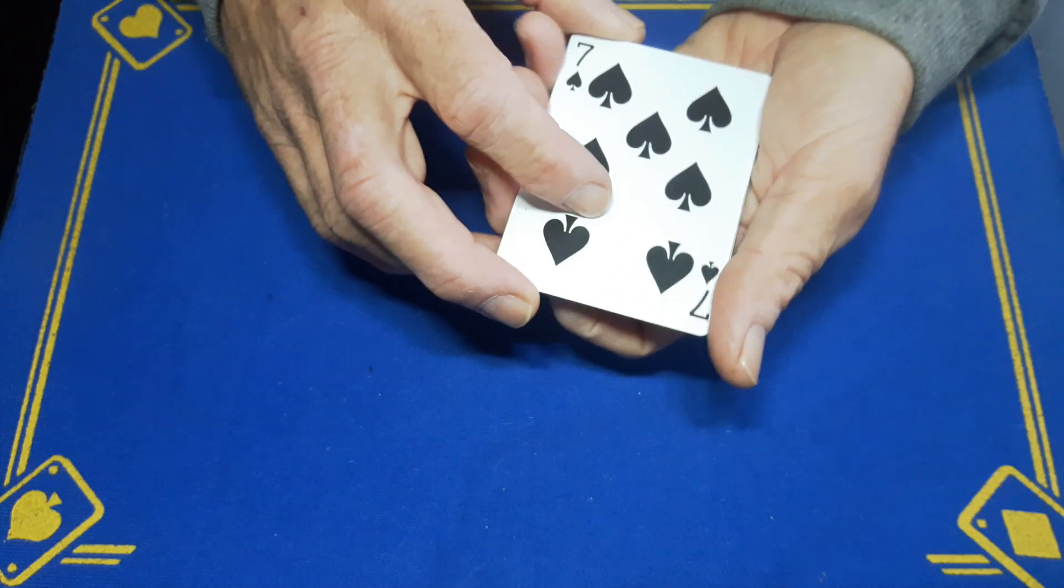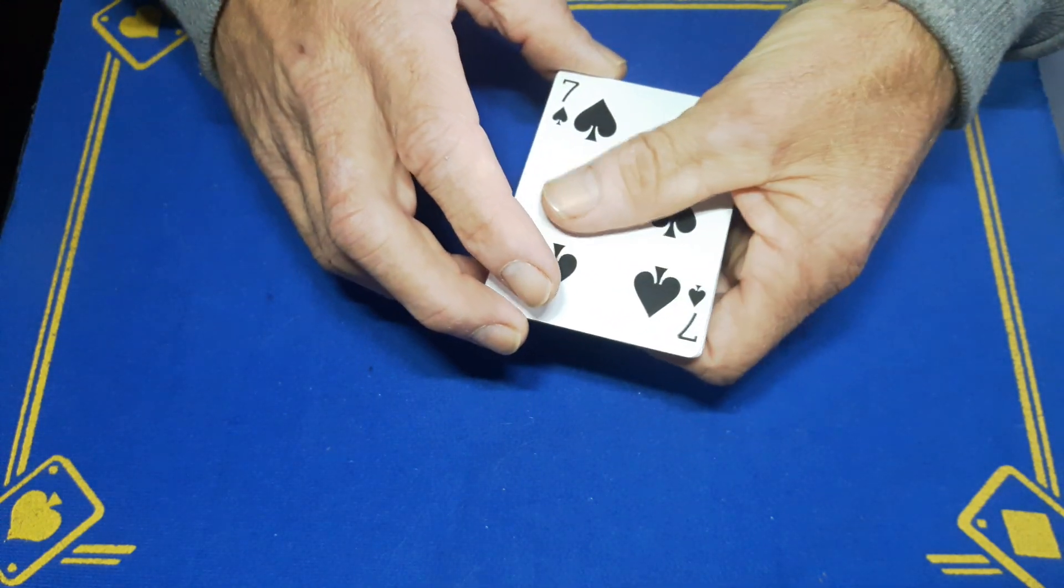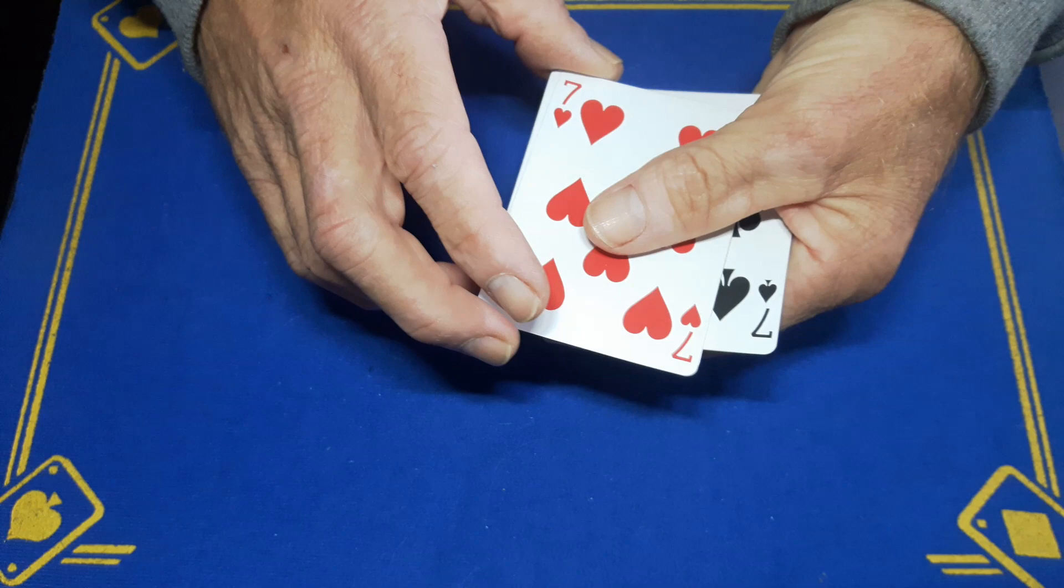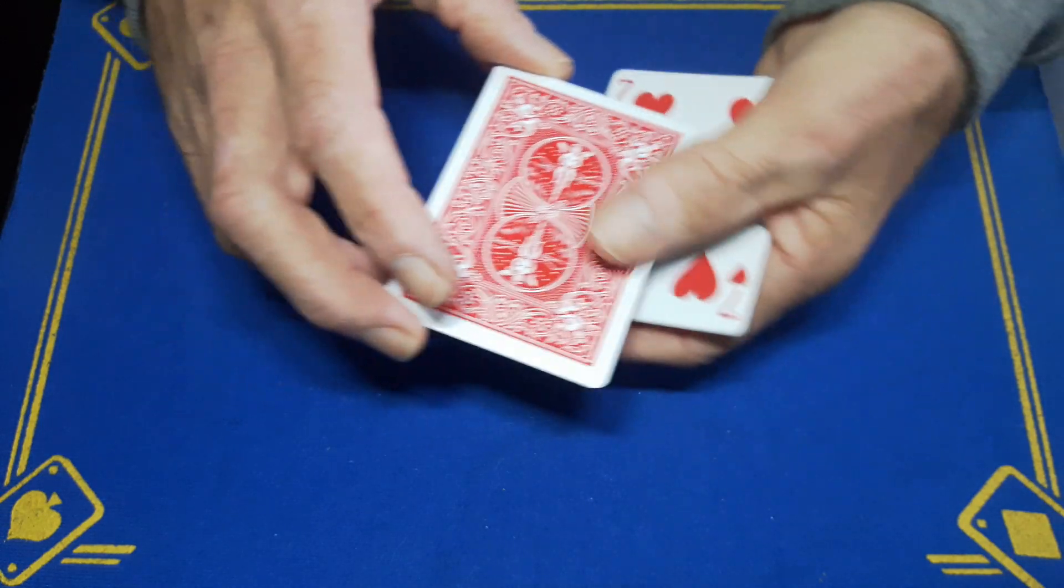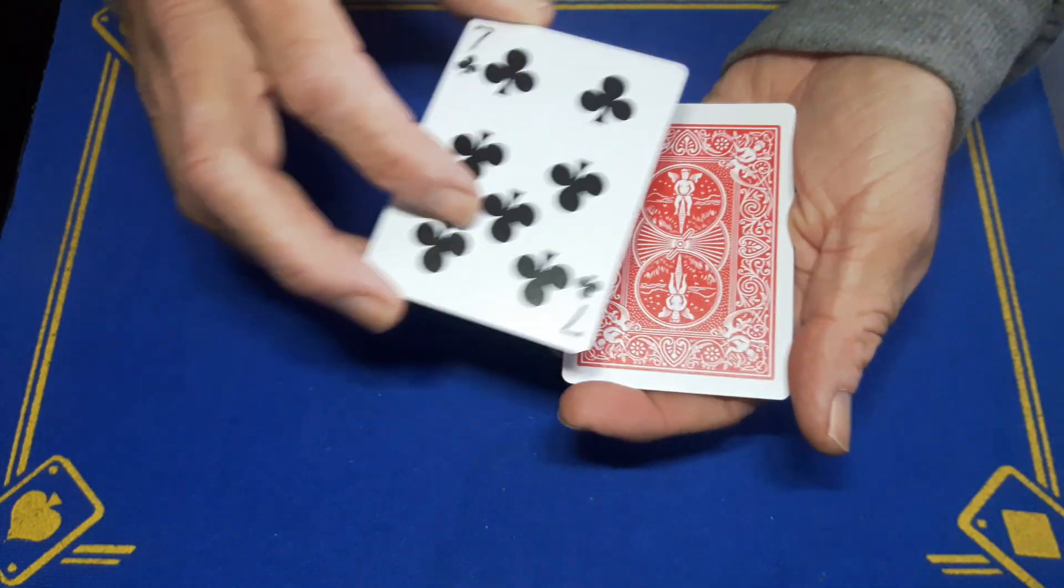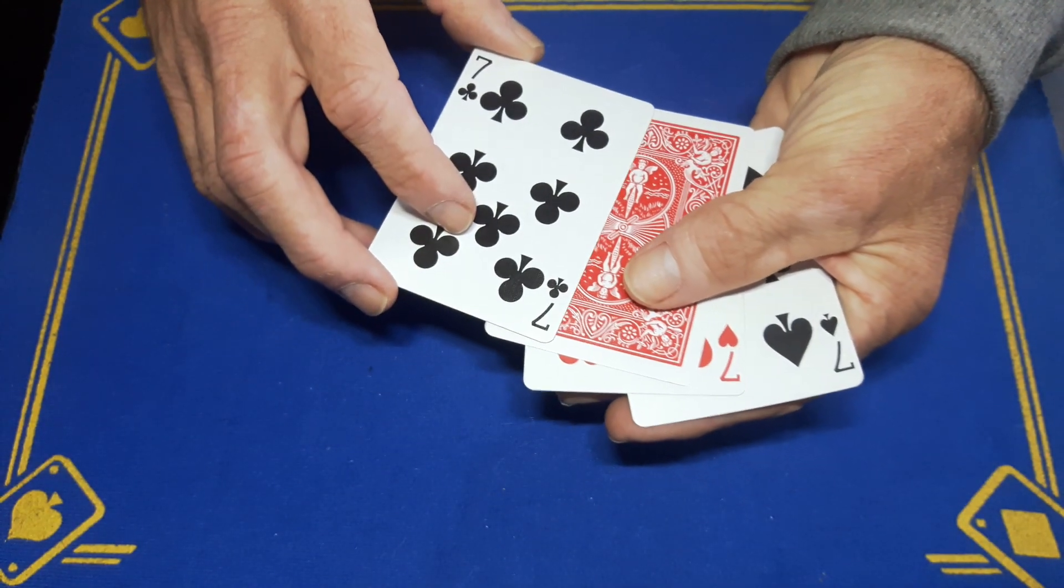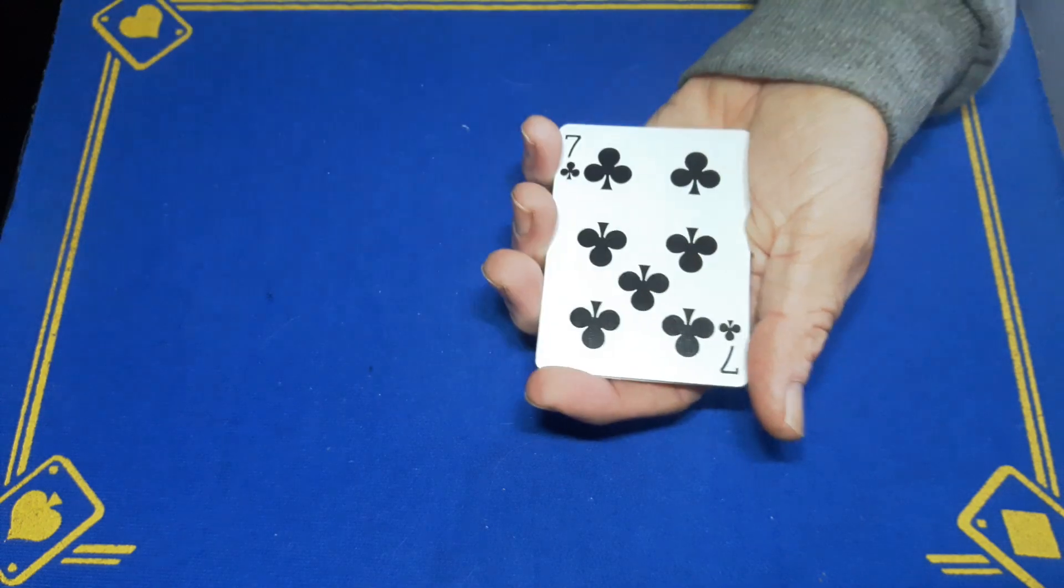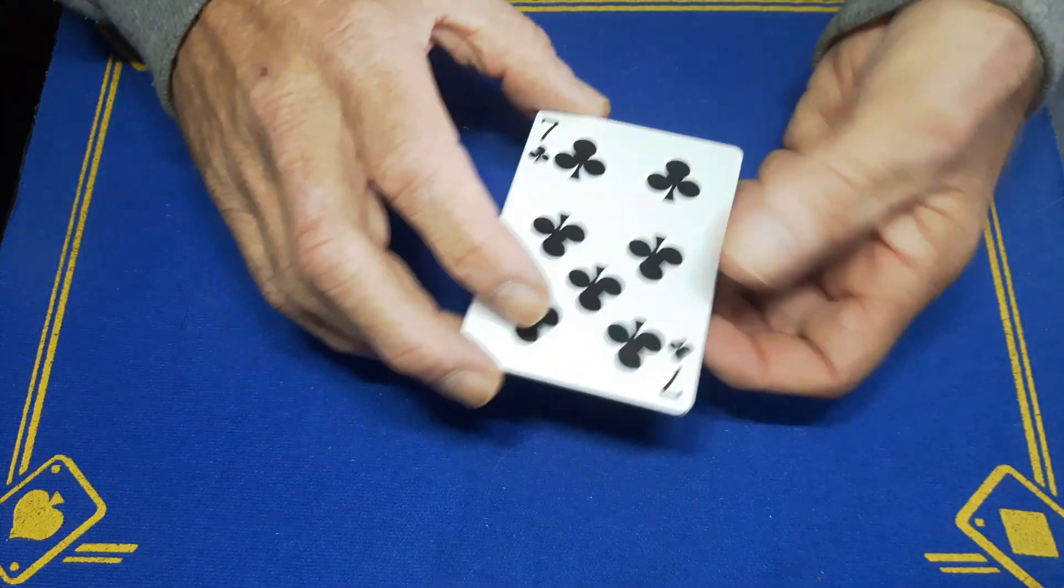Then you're going to say you're going to give it a little wave and one at a time the cards will turn face down. So you're just going to peel the seven off, peel the other seven of hearts off. You will now have a face down card. Peel that off. This is a double, make sure it doesn't split and show them the first seven of diamonds has turned face down.